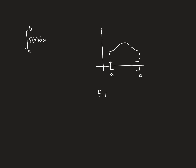We'll just take the Dirichlet function on the interval from 0 to 1. It maps the interval 0 to 1 into the real line, and it's a very simple indicator function. It takes x and maps it onto either 1 or 0. It's an indicator function for the rational numbers: the rationals are mapped onto 1, and all the irrational numbers are mapped onto 0.